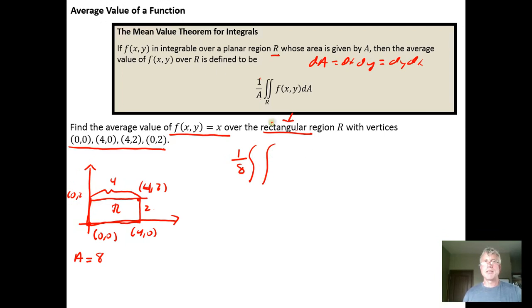It's going to be 1/8 and then we have to integrate over the region, and the function is just x. So a simple example, and then we can either do dx dy or dy dx. I think with this being an x here I'd like to do dy first so that x is treated as a constant in the first integration. I think that makes things a little bit simpler.